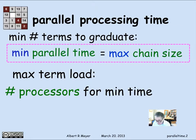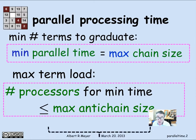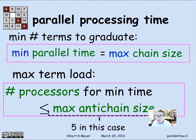A bound on the number of processors needed for minimum time is simply the maximum anti-chain size. In the course scheduling example from the previous segment, it turned out there were five courses you could take in one term — in the second term — and that was the maximum anti-chain size. So that's an upper bound on the number of processors needed to achieve minimum time.